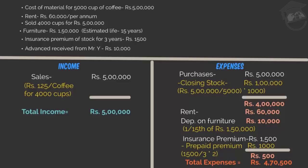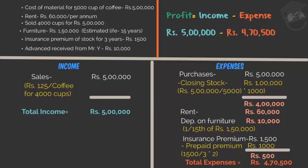Following the matching concept, he listed all the expenses and the final total expenses come to Rs. 4,70,500. He then calculates profit: income Rs. 5,00,000 minus expenses Rs. 4,70,500, giving a profit of Rs. 29,500 for this particular year. I was giggling with happiness and decided that from next year I am going to appoint an accountant. Now you would have understood how important it is to follow accounting concepts, especially the matching concept for calculating net profits.